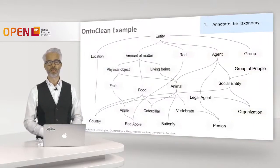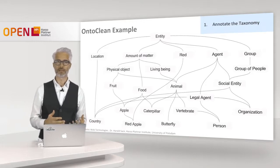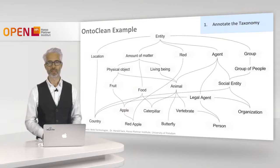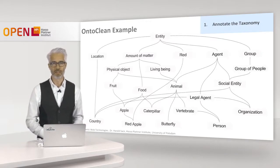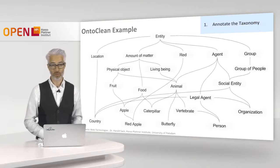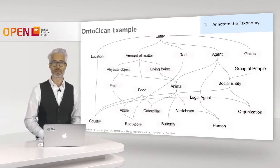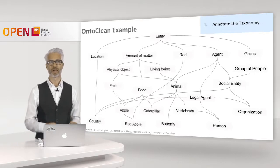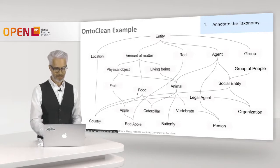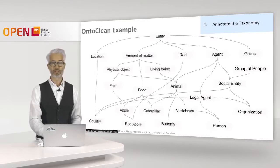OntoClean is usually applied on taxonomic structures. Here we have a hierarchy — a taxonomy. As an upper concept we have 'entity', and all other concepts are sub-concepts of it. A location is subordinated to entity, and country is a specific kind of location. Country is also a sub-concept of legal agent and social entity. Then we have amount of matter, which splits into physical object, living being, and food. We also have 'red' — things that are red — as well as agents and groups.